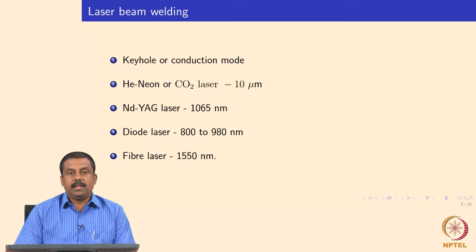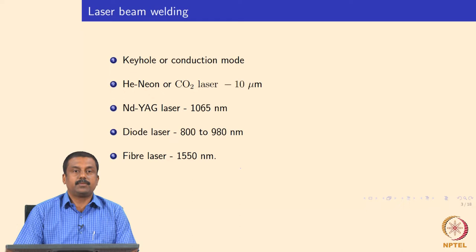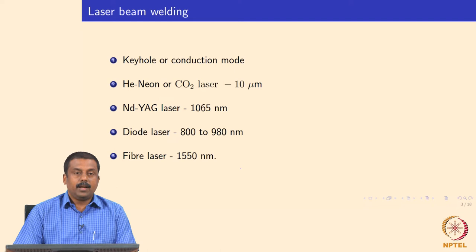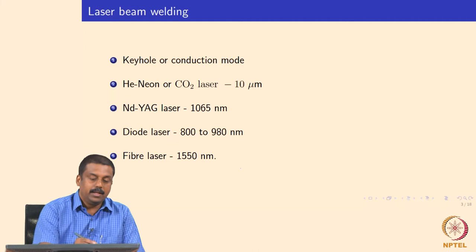There are broadly three or four types of lasers that are commercially available, which you may have studied in physics. The most common laser sources used in welding are: first, gas lasers like helium-neon or carbon dioxide lasers, which produce a wavelength of around 10 micrometers, using helium, neon, or carbon dioxide gas as a gain medium. The most common type is the solid state laser, where the gain medium is made of Nd:YAG.